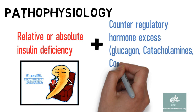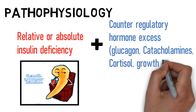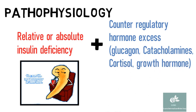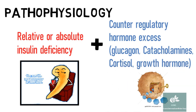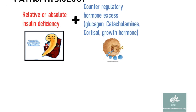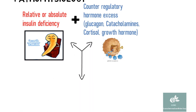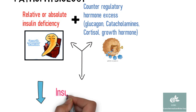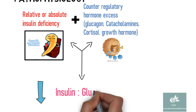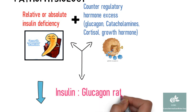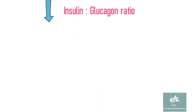Counter-regulatory hormones include glucagon, catecholamine, cortisol, and growth hormone. Both insulin deficiency and glucagon excess in particular are necessary for DKA to develop. The decreased ratio of insulin to glucagon promotes gluconeogenesis, glycogenolysis, and ketone body formation.